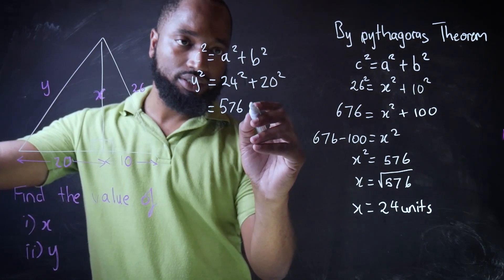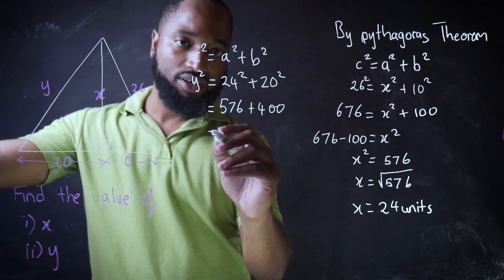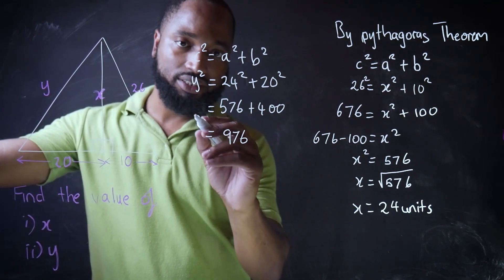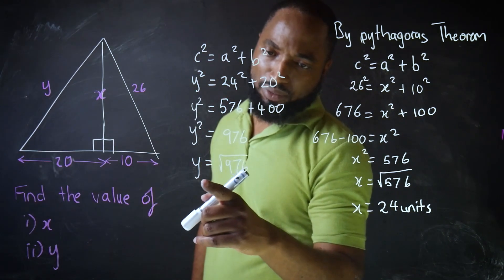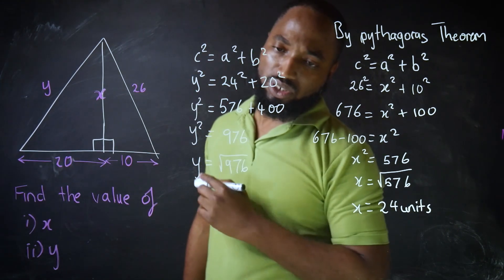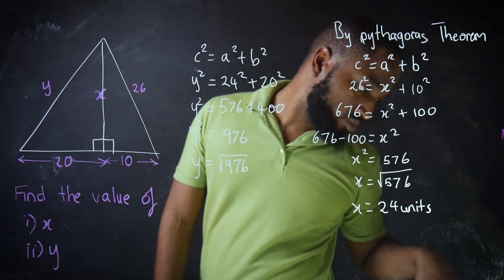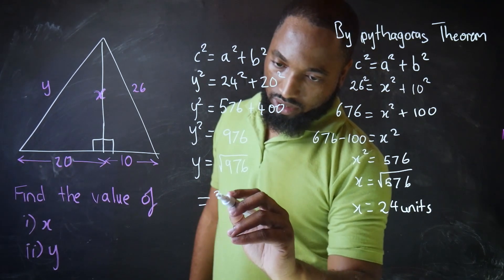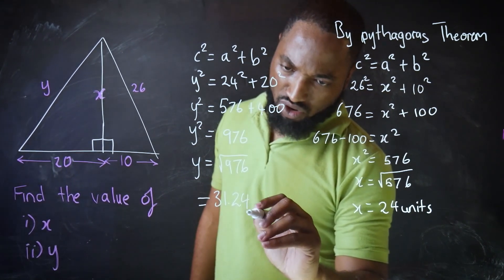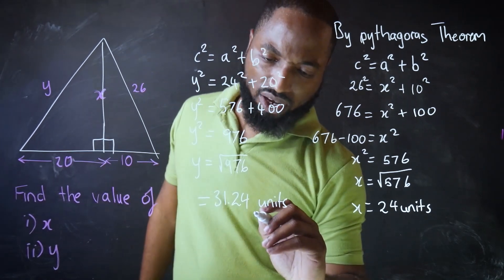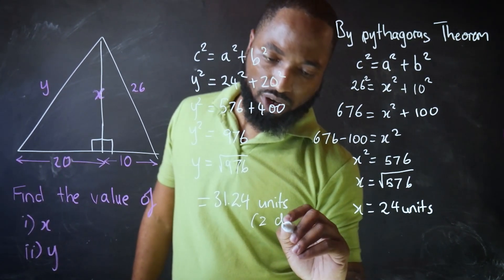24 squared is 576, plus 400 is 976. This comes down to Y being the square root of 976, which is, I don't know, 31.24. And this is to two decimal places.